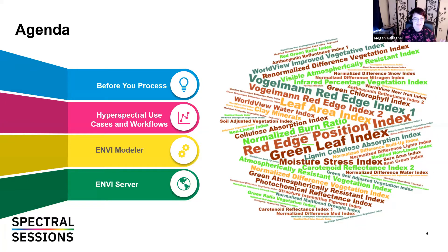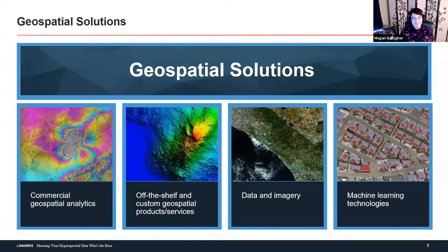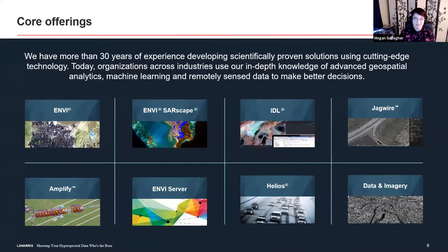A little bit about us: L3 Harris is a global aerospace defense technology innovator delivering end-to-end solutions that meet customers' mission-critical needs. We have over 400 locations internationally and over 50,000 employees. Our geospatial solutions division focuses on commercial geospatial analytics, off-the-shelf and custom geospatial products and services, data imagery, and machine learning technologies. Today we'll look at core offerings including ENVI and ENVI Server — we have over 30 years of experience with hyperspectral data processing.